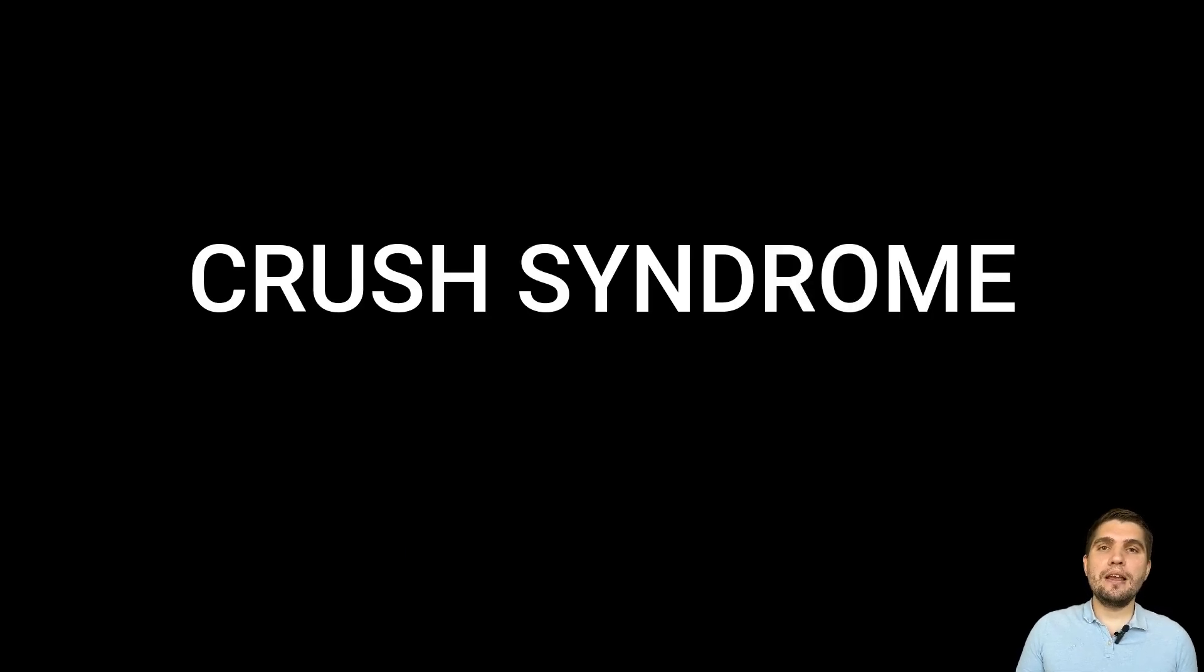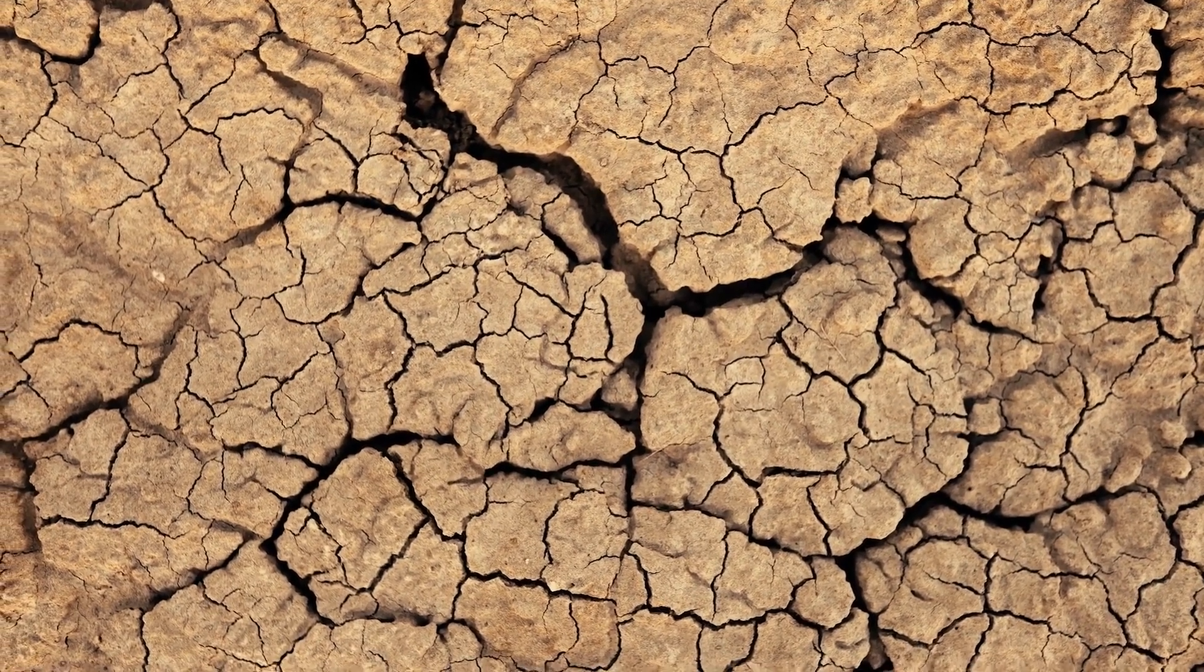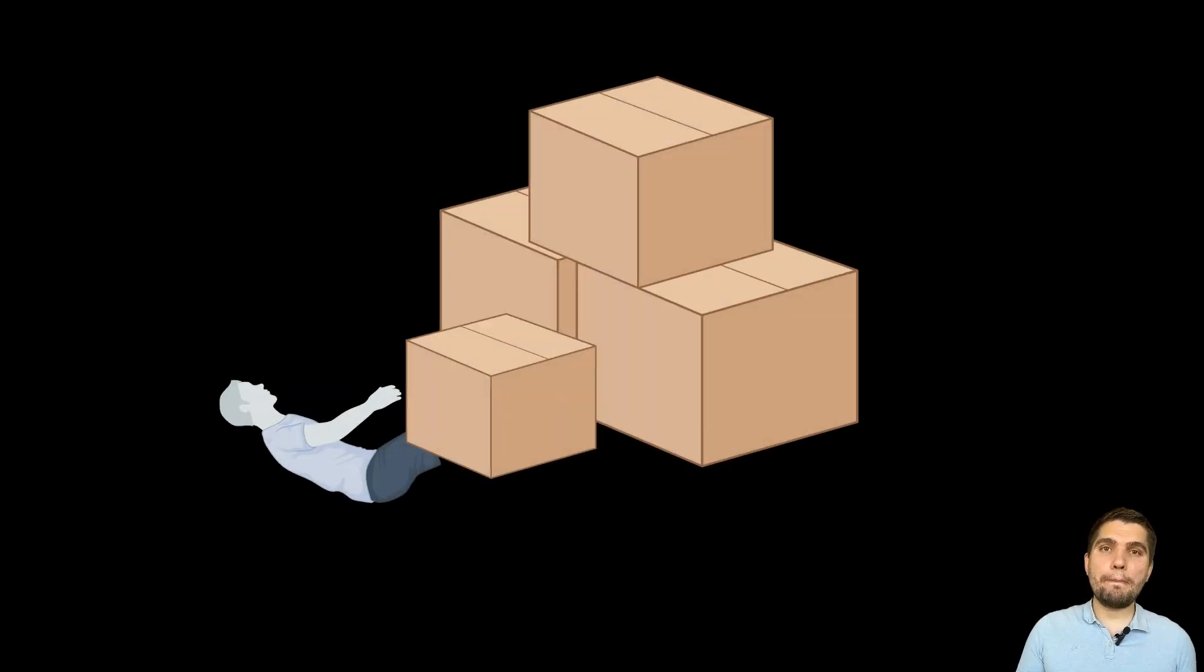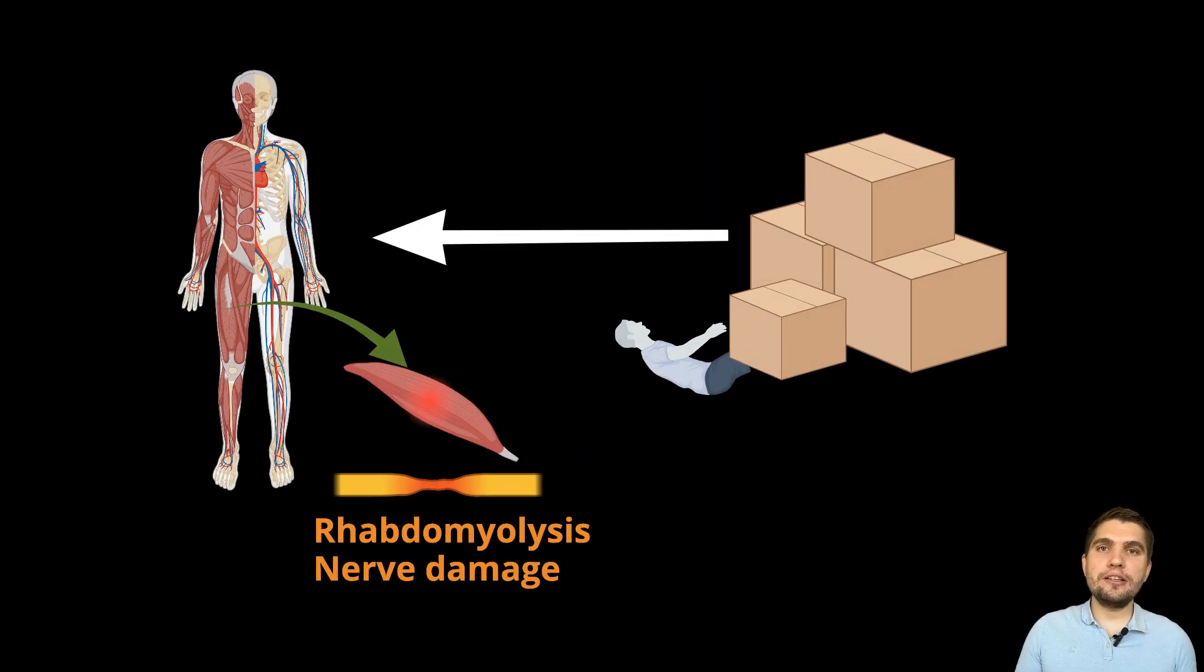In human medicine, there is a similar condition called crush syndrome, often seen during disasters like earthquakes. It occurs when a limb or another body part is trapped beneath heavy objects, causing prolonged pressure. Once that pressure is suddenly released, it can lead to muscle and nerve damage, severe complications like rhabdomyolysis, systemic organ dysfunction, and even acute kidney injury.